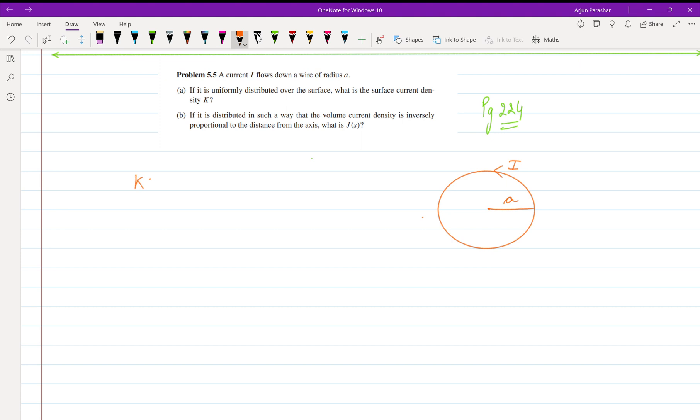So K is surface current density. As we know, K is equal to I upon DL perpendicular, where the length element DL is perpendicular to the surface. So it can only be the circumference of the loop, so I'll be using 2πa because a is the radius of the loop. So this is the surface current density.